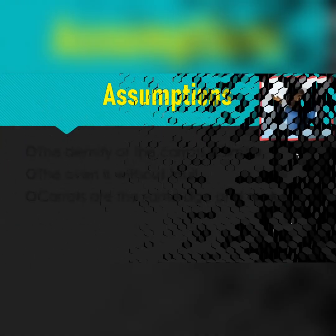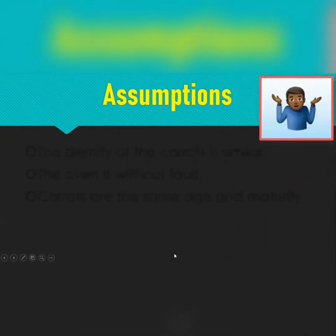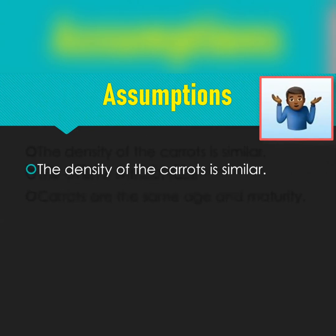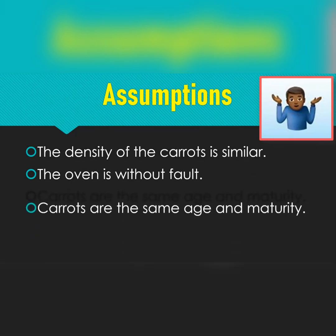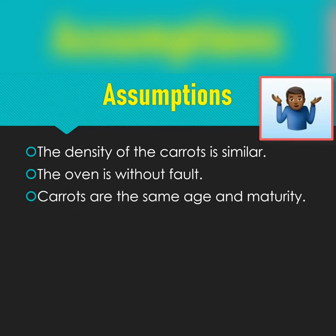Assumptions are what we assume to be true but may not necessarily be. We assume the density of the carrots is similar. We assume the oven is functioning correctly, so nothing goes wrong from one drying session to the next. And we assume the carrots are of the same age and maturity.